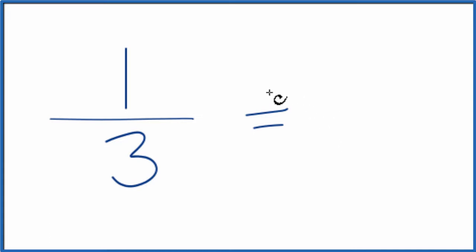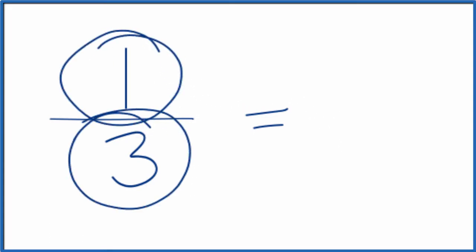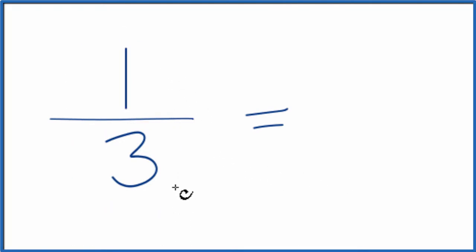To do that, we need to find a common factor, something that goes into both one and three evenly. When I look at one and three, the only thing that's going to go into both, it's just going to be one.